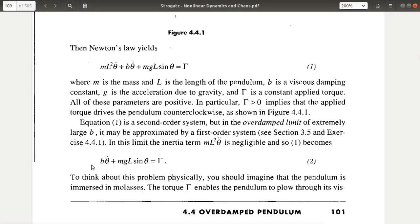And if we do that, what we will get is theta dot, which is equal to gamma by B minus MgL by B into sin theta.